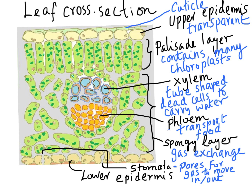These cells are the most important ones in the leaf because they carry out the main job of the leaf, which is photosynthesis. They are called the palisade layer, and each cell is called a palisade cell. They contain more chloroplasts than any other cell in the leaf. They are also arranged vertically and closely packed to maximise the surface area exposed to sunlight and absorb maximum light that passes through the top of the leaf.